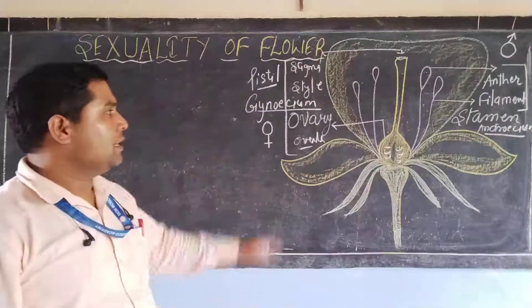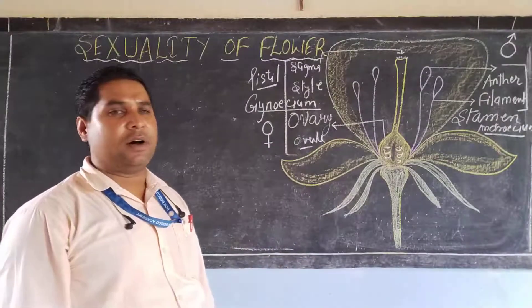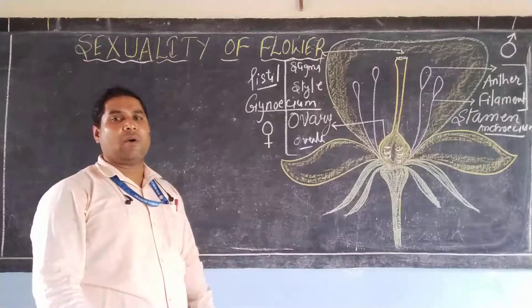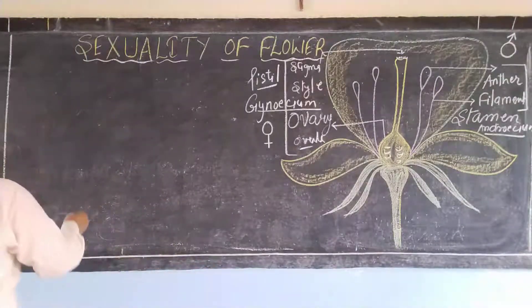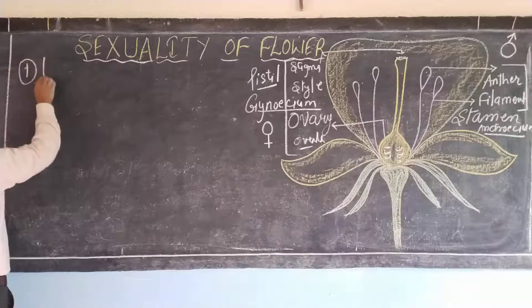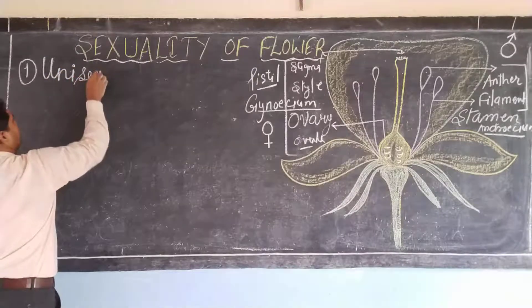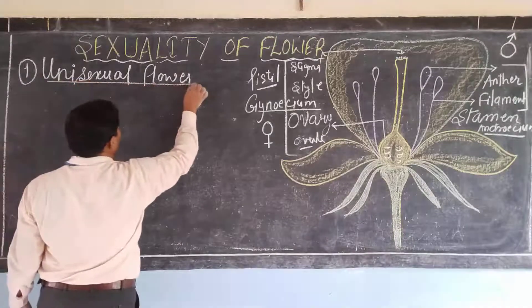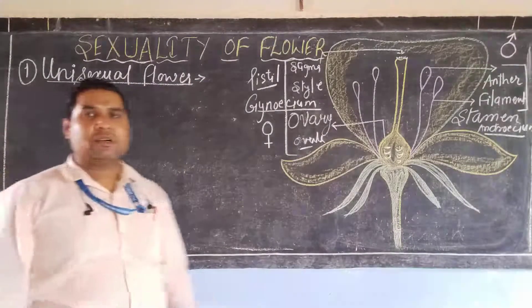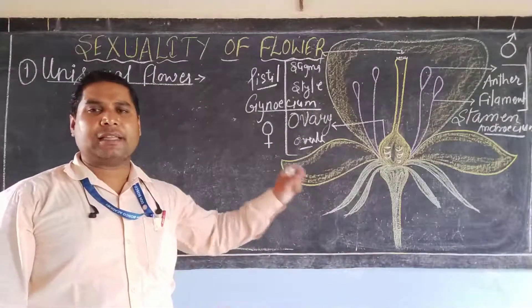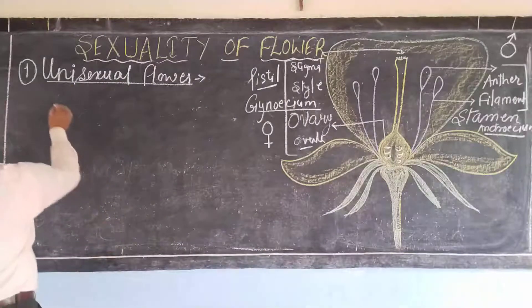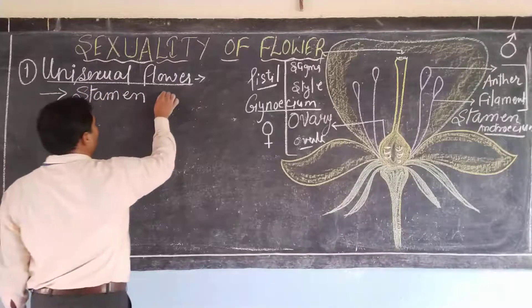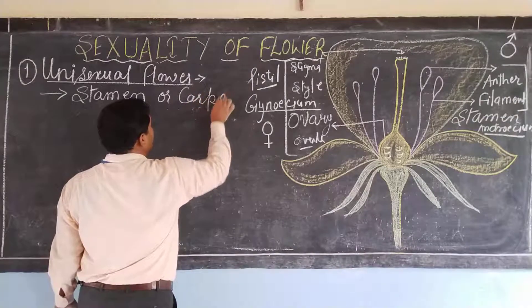Now that we know about the male and female parts of the flower, I am going to discuss the sexuality of the flower. According to the presence of male and female parts, flowers are of three types. The first type is the Unisexual flower — the flower which consists of either the male part or the female part, either the Stamen or the Carpel.